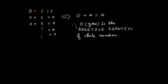By additive identity, we mean that if zero is added — if you add zero to any whole number, in this case we are talking about whole numbers — you will get back the same number. And therefore zero is the additive identity of whole numbers.